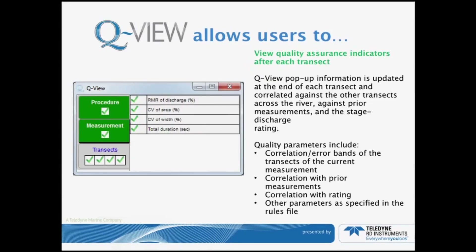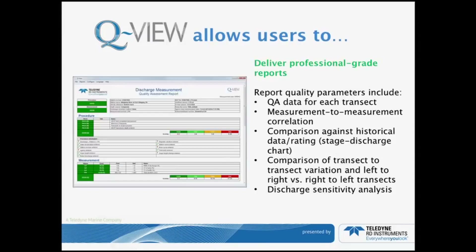Once the measurement is done, it's typical you're going to do two, four, or maybe six or eight transects, so now we're going to start comparing transect to transect. During the transect information, correlations and error bands of each transect of the current measurement are compared. Correlations with prior measurements are compared, as well as correlations within the ratings — are they within the parameters set by your agencies?